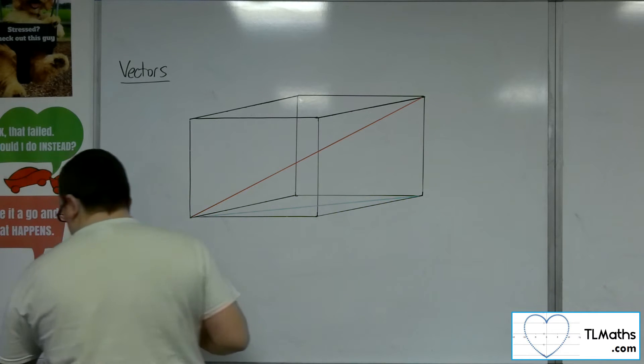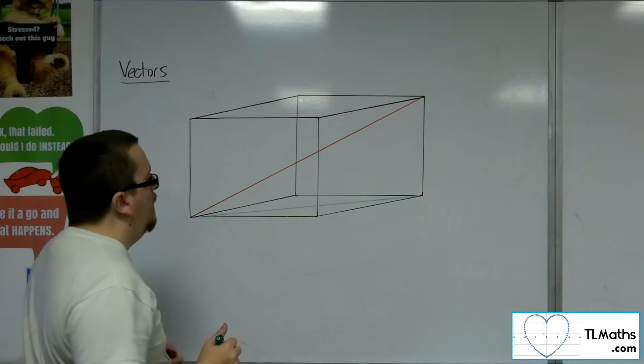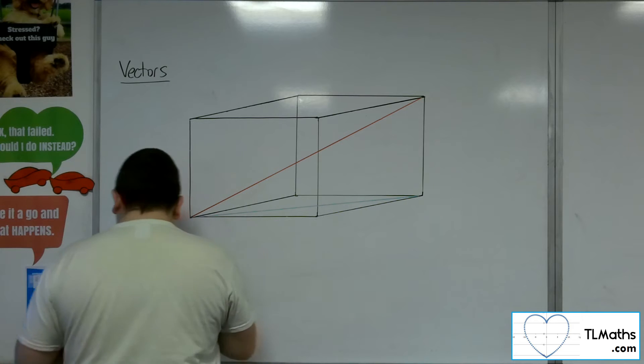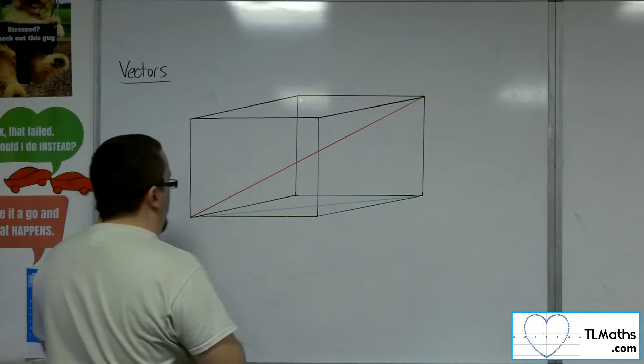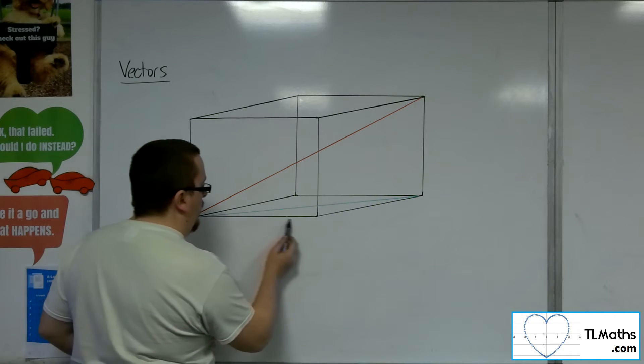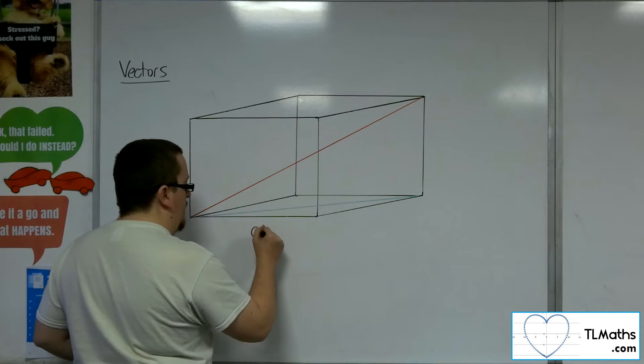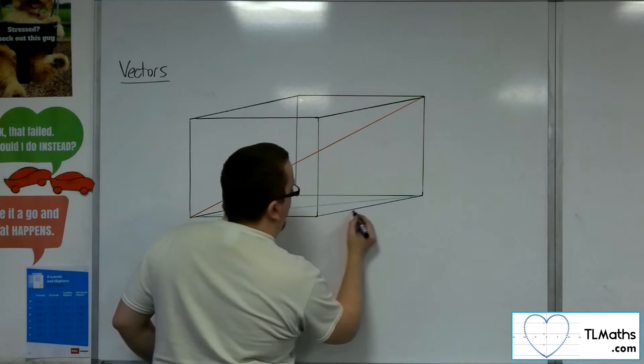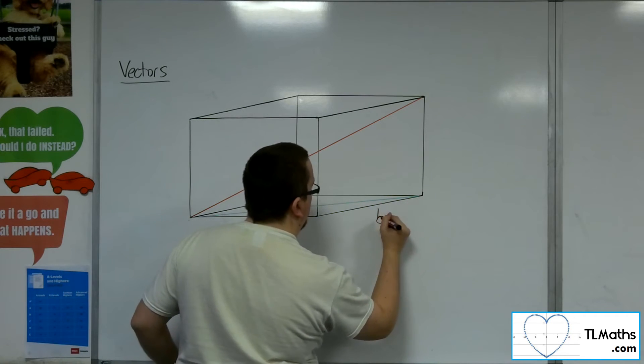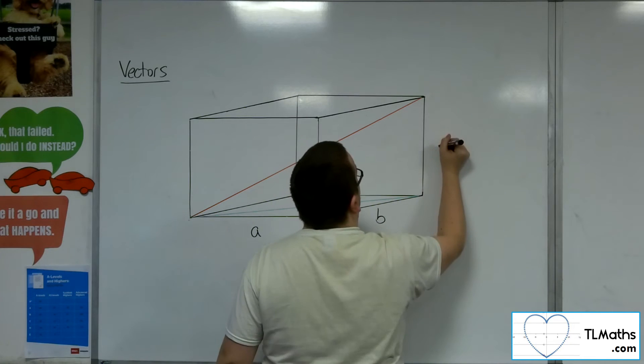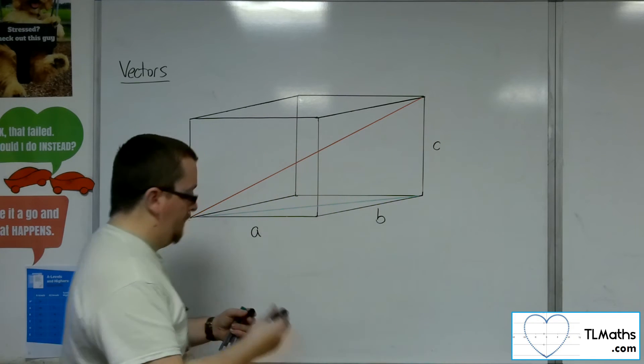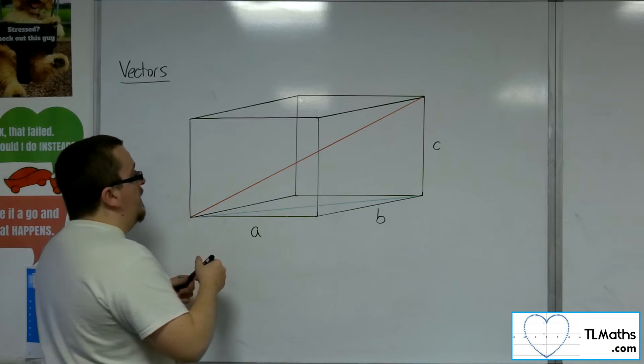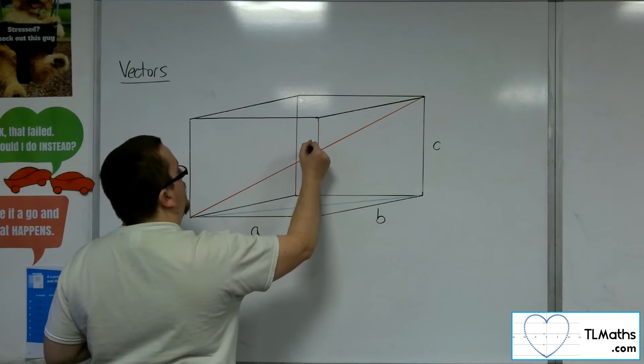OK, so what do we have? Well, let's say I give some dimensions to this. So I say that this is length A, this side is length B, and this height is length C. And the length I'm trying to find is D.